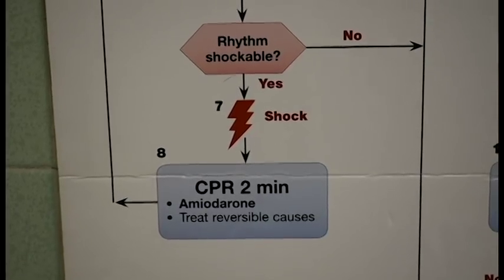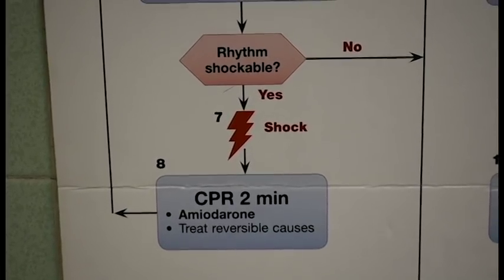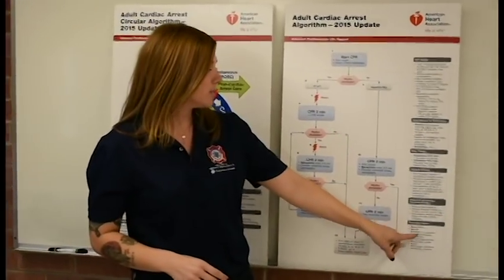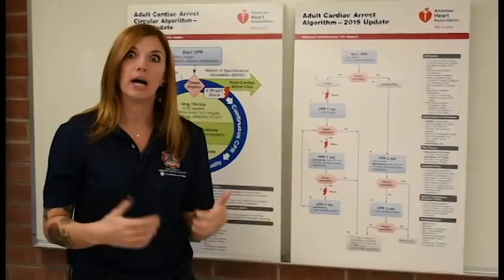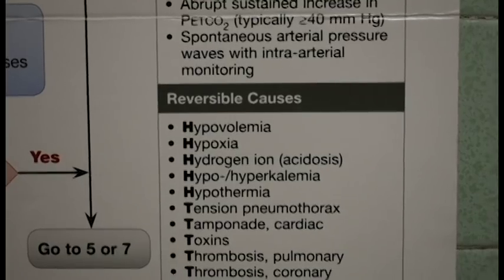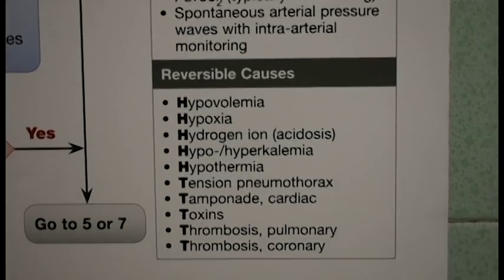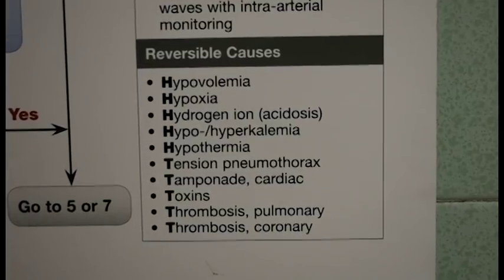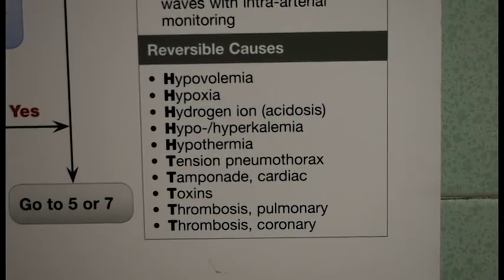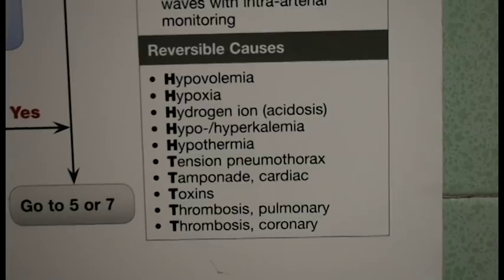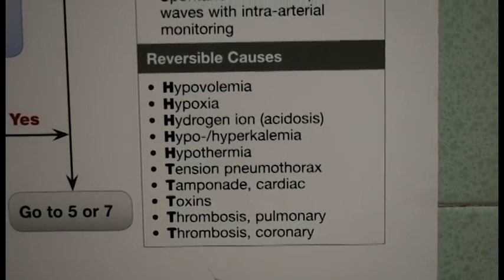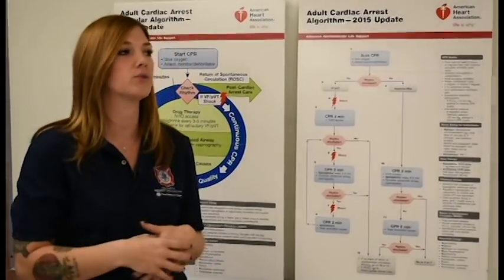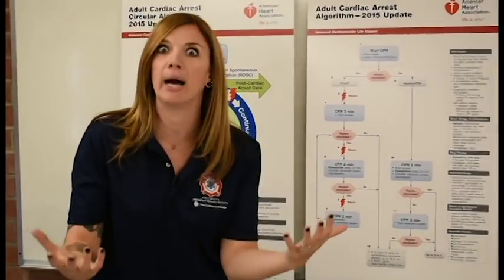At this time, you would consider giving amiodarone. Then we want to start thinking about reversible causes — your H's and T's — such as hypovolemia, hypoxia, hydrogen ions or acidosis, hypo or hyperkalemia, hypothermia. Then we look at our T's: tension pneumo, cardiac tamponade, toxins, thrombosis — pulmonary or coronary — so start thinking of an MI.